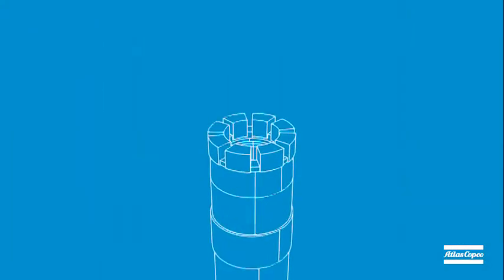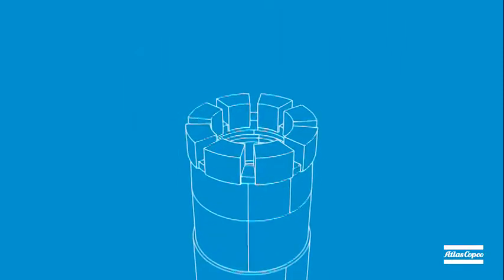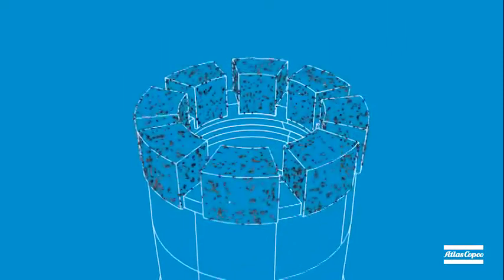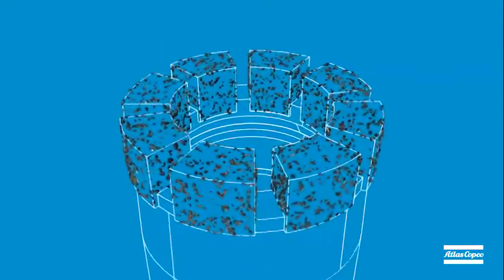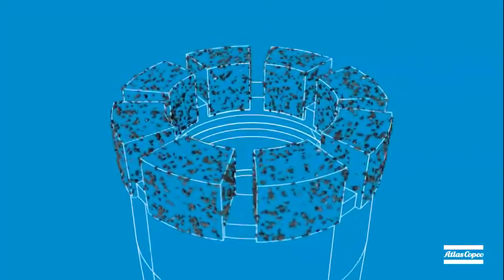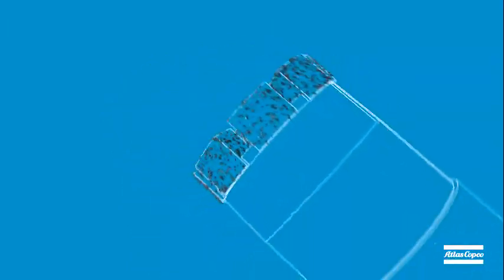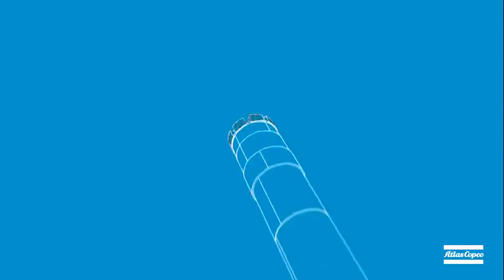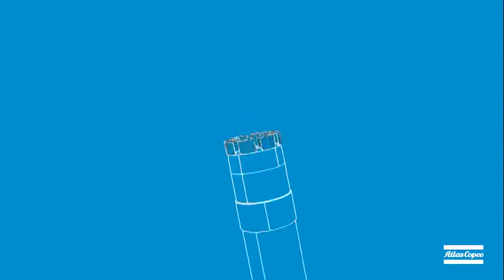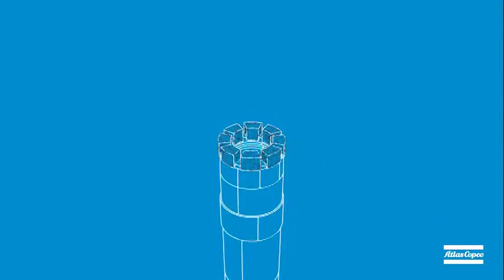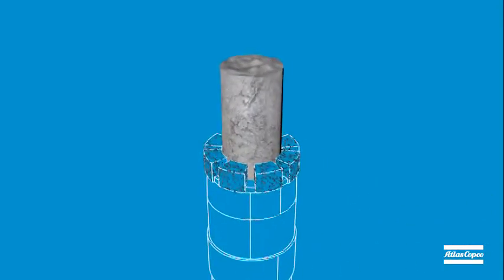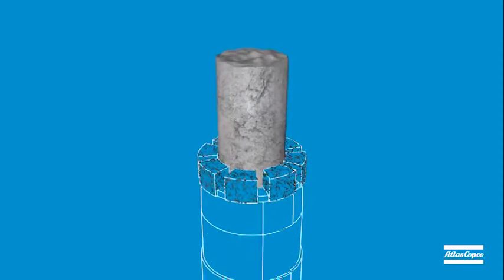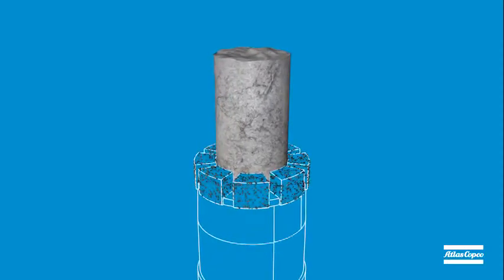Core drilling is a rotary cutting drilling method. A ring-shaped drill bit armed with cutting tools, for instance diamonds or tungsten carbide, is forced against the rock surface and is rotated clockwise at a high speed. A round bar, a so-called core sample, is cut out of the rock or out of the soil.